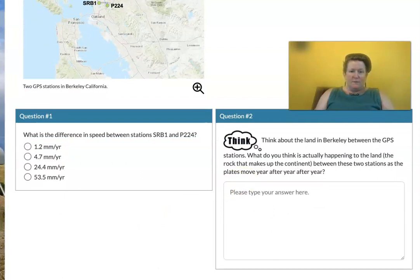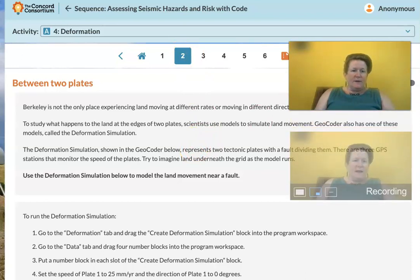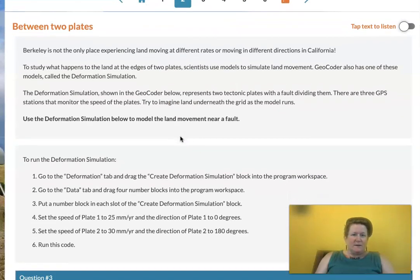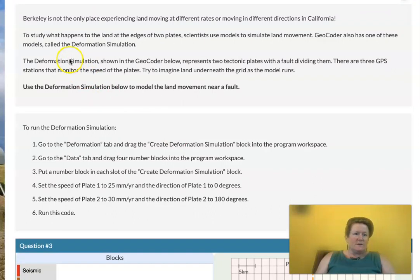We're going to go to page two. I'm going to click on the number two just below where you can see or you can click on it up here as well. Berkeley is not the only place experiencing land moving at different rates or moving in different directions in California. To study what happens to the land at the edges of two plates, scientists use models to simulate land movement. Geocoder also has one of these models called the deformation simulation.